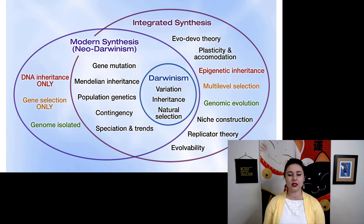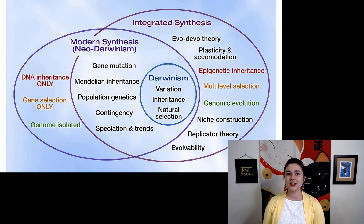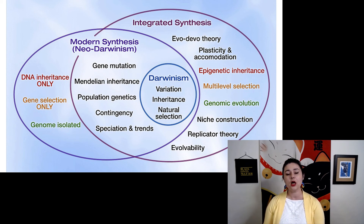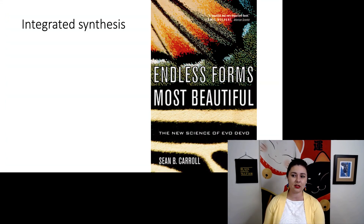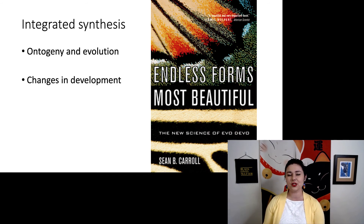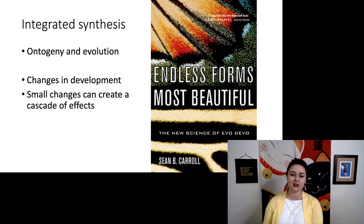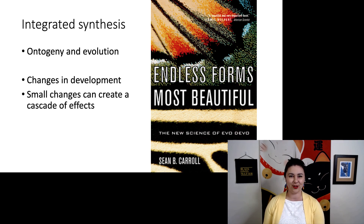Here's a slightly more complicated diagram that shows that at different syntheses, we actually rejected some information we thought was true. Some things from the modern synthesis — like inheritance only through DNA, only gene selection, and the genome being isolated — we no longer believe are true, due to the integrated synthesis. That is much more recent, happening in the 1970s, and is about ontogeny in evolution, or changes in development. Really tiny changes can create a cascade of effects. I highly recommend the book by Sean Carroll, 'Endless Forms Most Beautiful,' which covers evolutionary development and a lot of what we learned in this integrated synthesis.